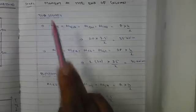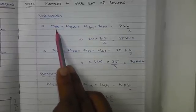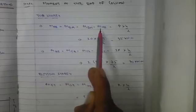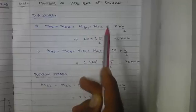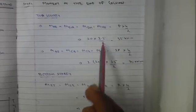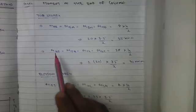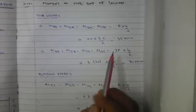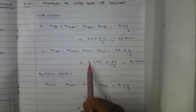The next step is to find the moment at the ends of the columns for the top story. For exterior columns, M_AE = M_EA and M_DH = M_HD, calculated as p × h/2 = 20 × 3.5/2 = 35 kilonewton-meters. For interior columns, the force is double, so 2p × h/2, giving a value of 70 kilonewton-meters.